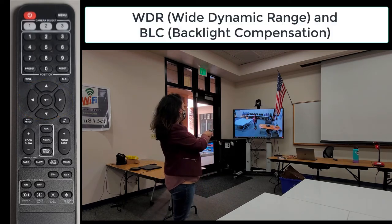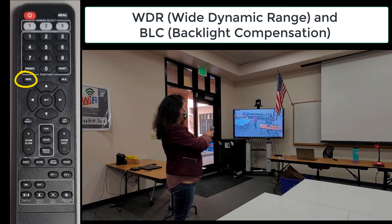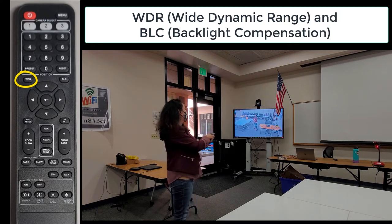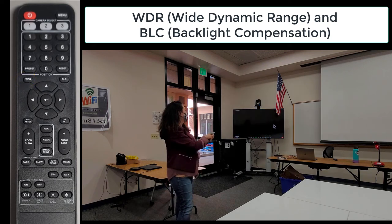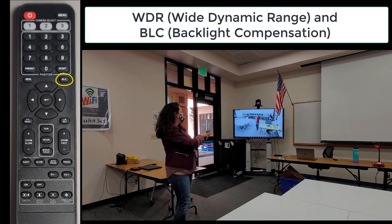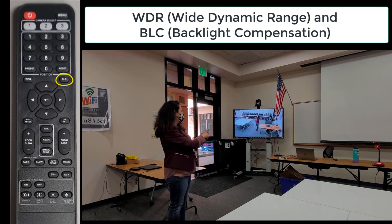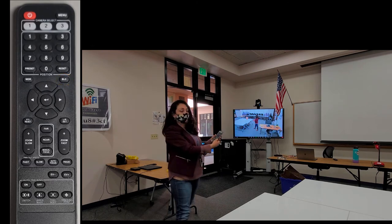Wide dynamic range independently adjusts the brightness of the darkest and brightest areas of an image — you can press to turn it on. You can also press backlight compensation, which adjusts the brightness of an entire image. You can play around with these options, turning one or both on, to see what works best based on your unique lighting situation. For this demo, I'm going to turn off wide dynamic range and turn on backlight compensation to make the image a little brighter.